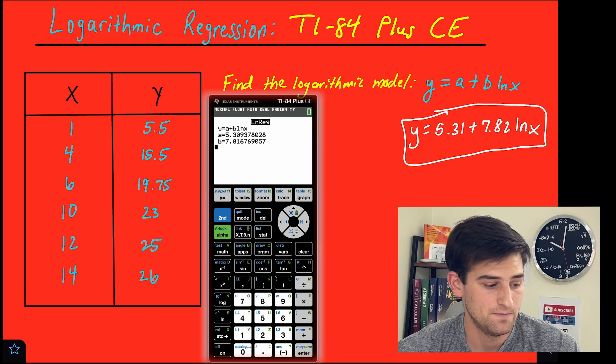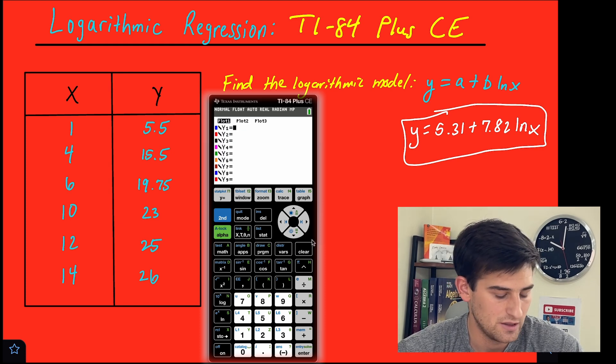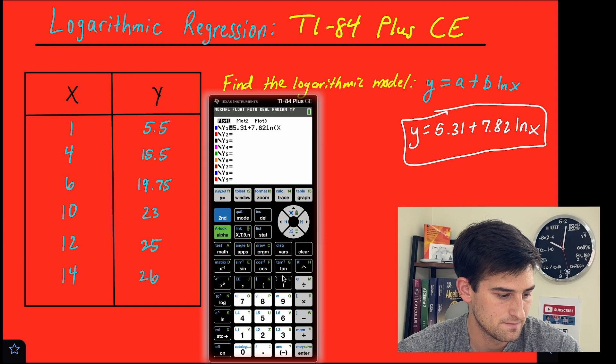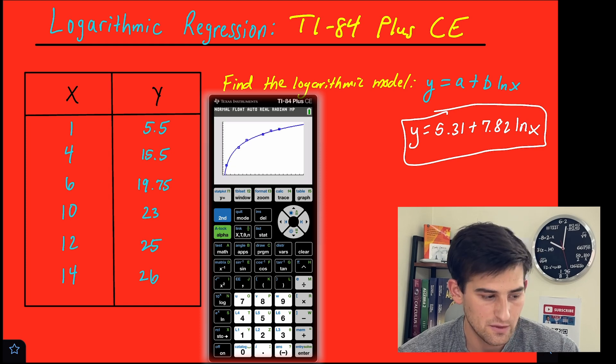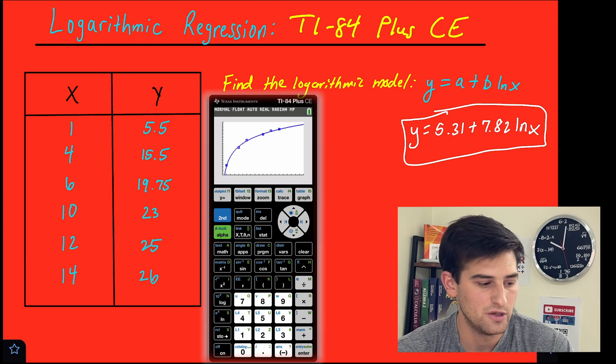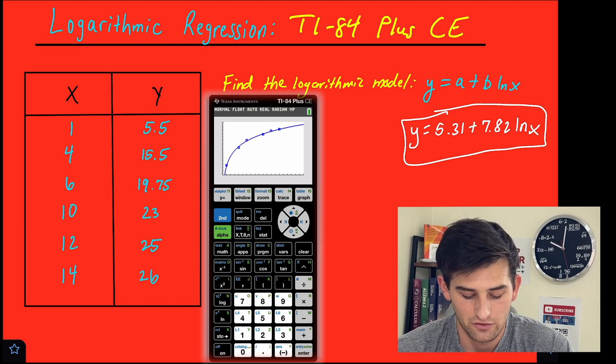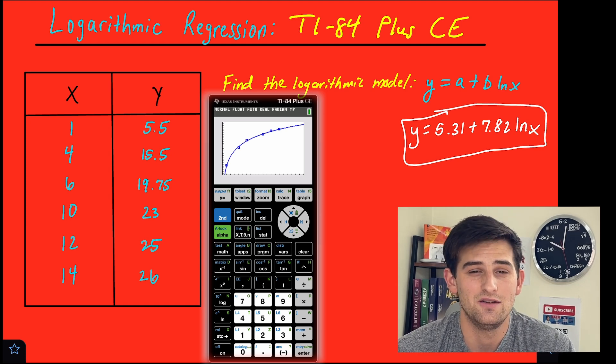Now we can take that equation, and we can go into y equals, and we can graph this 5.31 plus 7.82 ln of x, okay? So we graph that, and we see that our function there goes pretty much through our points, telling us it is a very good model of the logarithmic function. So that's how you can use the TI-84 Plus CE graphing calculator to find logarithmic regression.